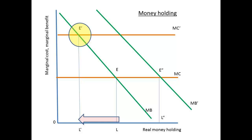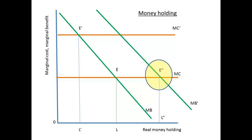If the interest rate on bonds rises, then the marginal cost curve shifts from MC to MC dash, and the new equilibrium point is now E dash. The desire to hold real money falls from L to L dash. A rise in real income shows a shift in marginal benefit to E double dash, and a rise in the demand for real money holding from L to L double dash. The argument is that more transactions will be carried out, increasing the demand for real money. Note that an increase in wealth can mean more wealth is invested in other assets, reducing the demand for real money, and more time deposits will be demanded.